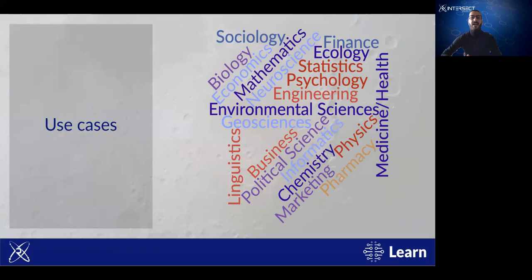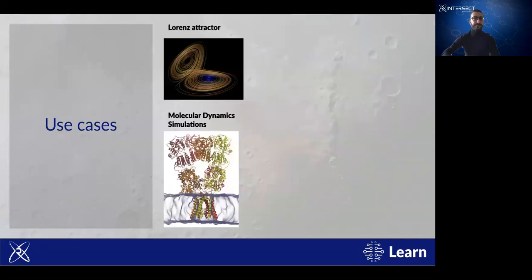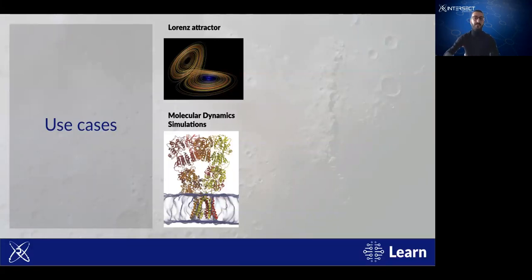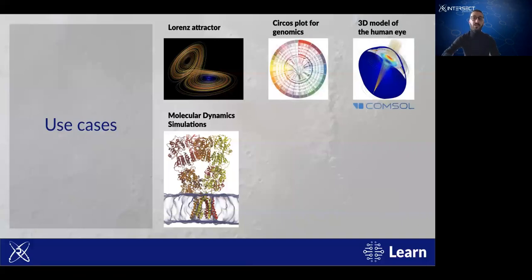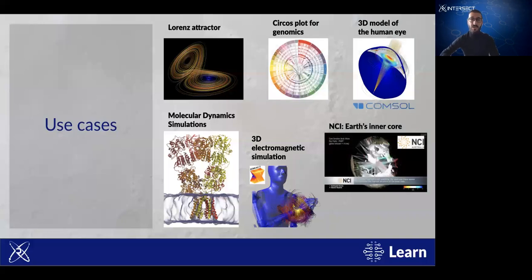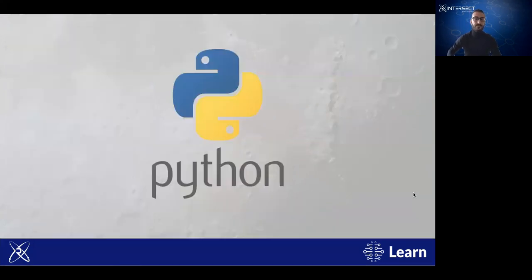You can find programming in any aspect of research — from social sciences to hard sciences, engineering, linguistics, business, marketing — wherever your topic is, you can apply programming and make your life easier. Some examples: molecular dynamic simulations for interactions between proteins and receptors, 3D modeling of parts of the human body, genomics, electromagnetic simulations, geophysics, and many more. Behind all these things, there is programming.